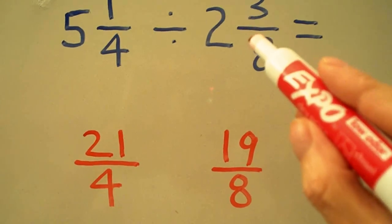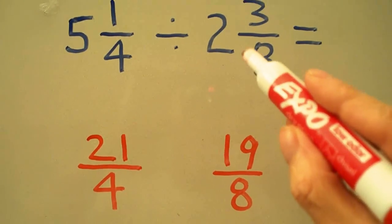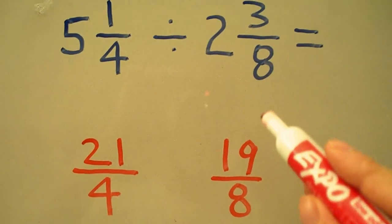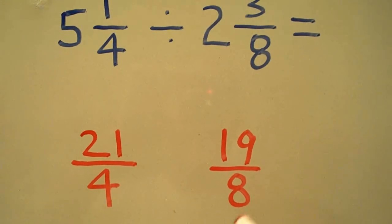For 2 and 3/8, we multiply our 8 by our 2 to get 16, add 3 to get 19, keep our denominator of 8 to get 19/8.